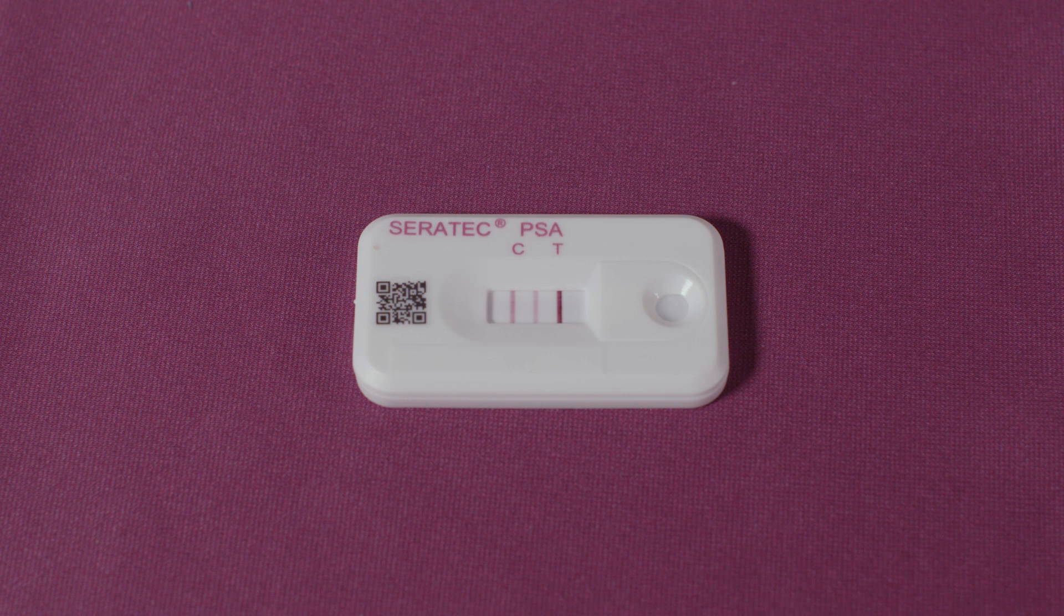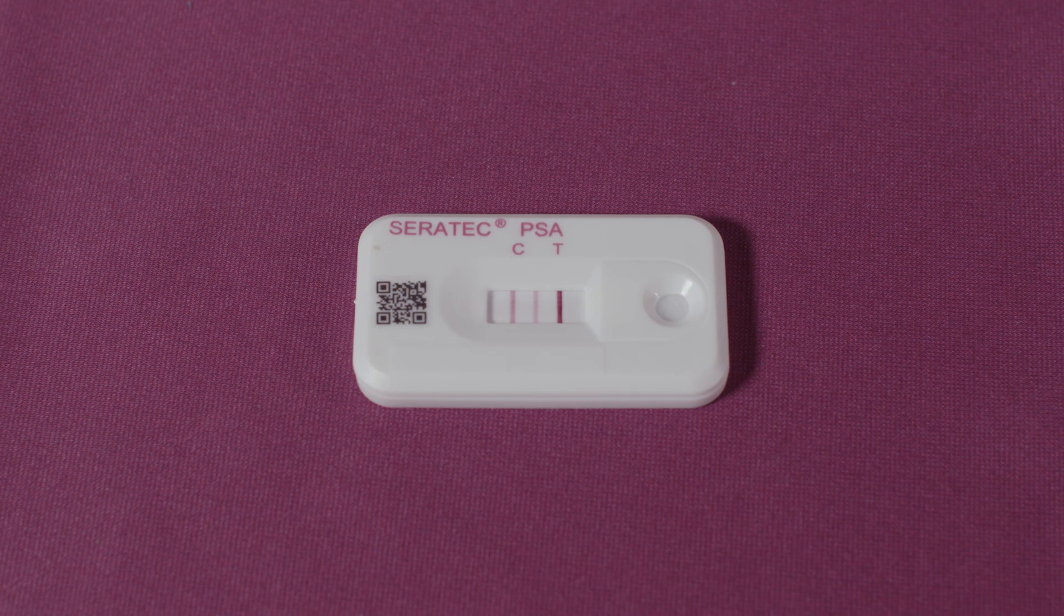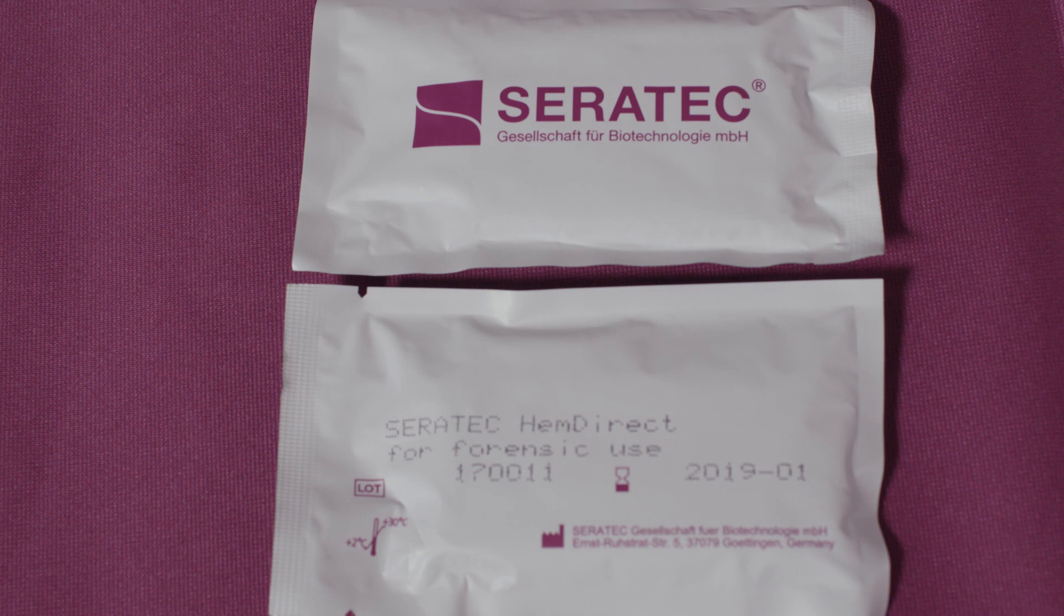The Ceratec PSA semi-quant test utilizes two different human specific monoclonal antibodies for the detection of human PSA. The test cassettes are supplied in individually wrapped packages with lot number and expiration date information written on the outside of the package.